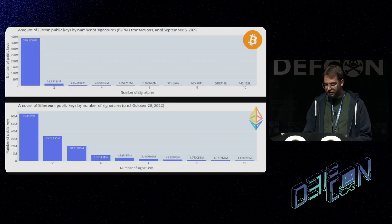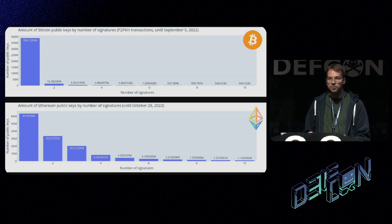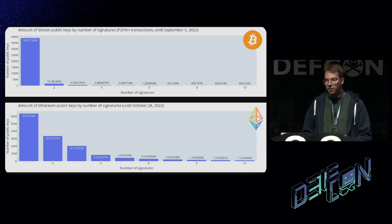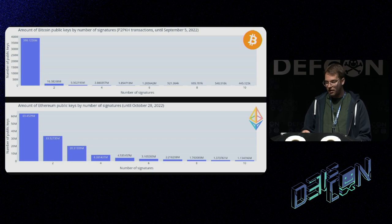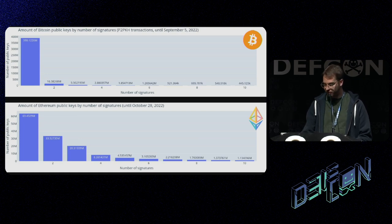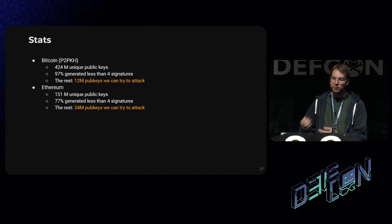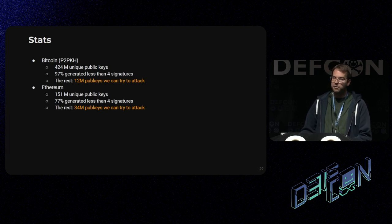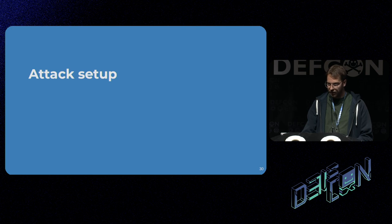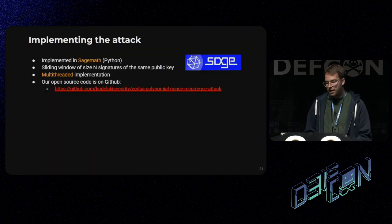A few stats. About 97% of Bitcoin wallets only generated three signatures or less. For Ethereum, this is a bit less extreme, but only 77% of wallets generated less than four signatures. The rest — those that have at least four signatures — we can try to attack. And that means there are at least a few million wallets we can try to break with this attack. We implemented the attack in Sage with a multi-threaded implementation. The code is out there on GitHub.